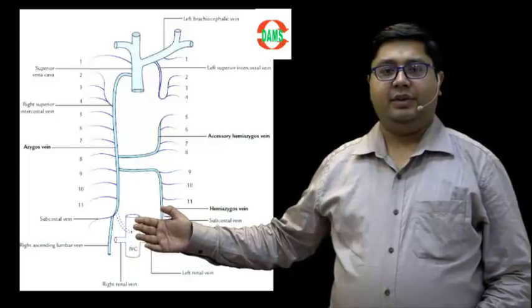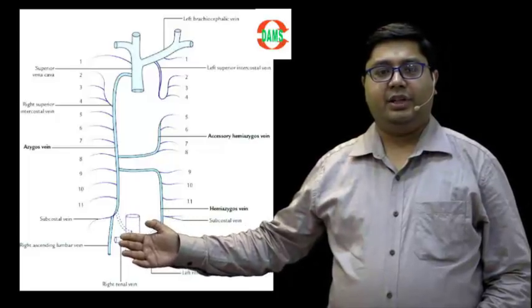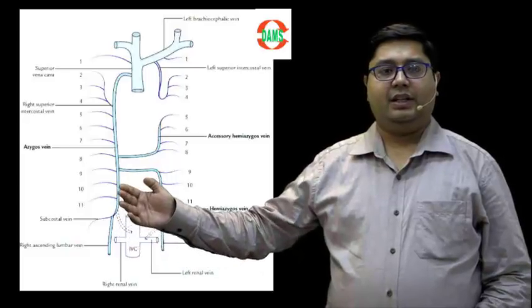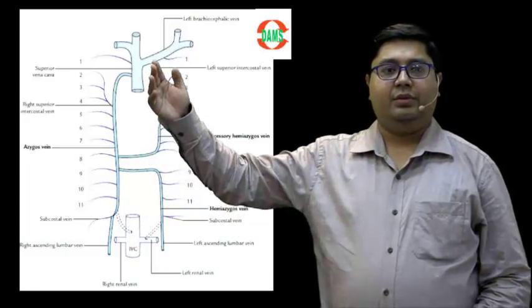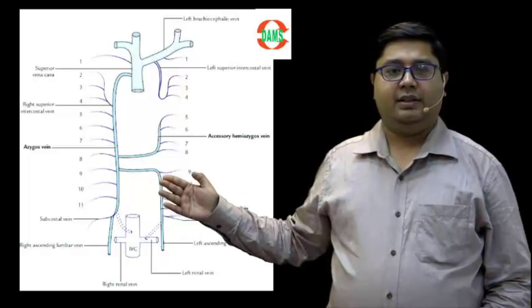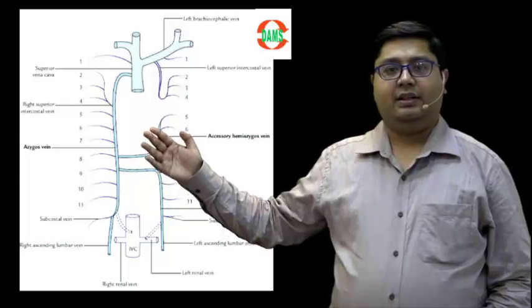Lower down we have inferior vena cava, and from the posterior aspect of inferior vena cava begins the azygos vein. Then azygos vein drains up to the superior vena cava, and its counterpart here is the hemiazygos and accessory hemiazygos vein.